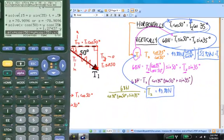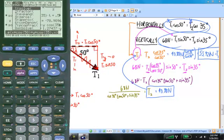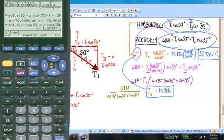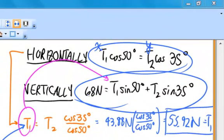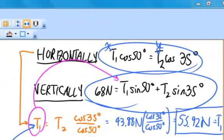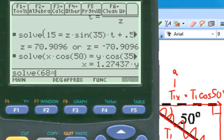Now, I want to put in the second equation. So I hit F2, solve. So I hit enter. And I want to put in the second equation. The second equation says that 68 is equal to T1, which is X. Again, you've got to use that multiplication sign. Times the sine of 50 degrees. Plus Y, that's what T2 is, times the sine of 35 degrees.